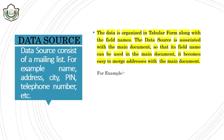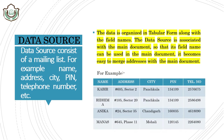As I told you students, the data source consists of a mailing list, e.g. name, address, city, pin, etc. The data is organized in tabular form along with the field name. The data source is associated with the main document so that its field names can be used in the main document, making it easy to merge addresses with the main document.